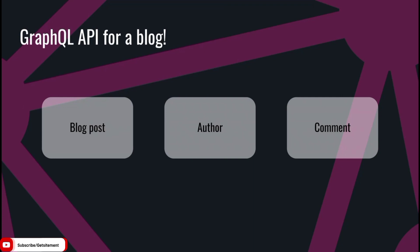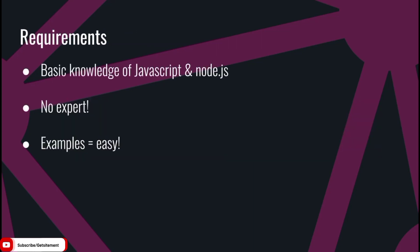To make this all a bit more realistic, we will create a GraphQL API for a blog. I have a small database with blog posts, authors, and comments that we will use as the basis for our API. To follow along, you'll need some basic knowledge of JavaScript and Node.js. You don't need to be a programming expert though. The code and examples are simple and self-explanatory, so basic knowledge is just fine.